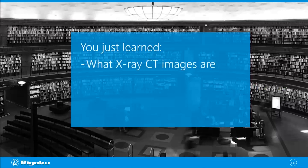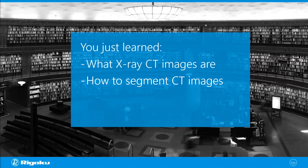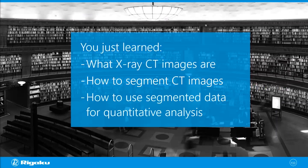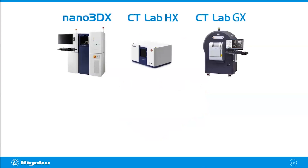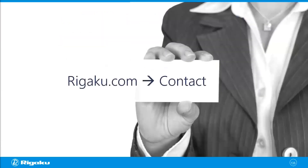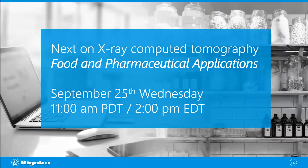I hope that this whole process is less of a mystery to you now and you found something interesting or useful for your image analysis or research. You've learned what X-ray CT images are, how to segment them, and how to use the segmented results for quantitative analysis. All images shown today were collected on Rigaku X-ray CT scanners. This is the end of the second part of the webinar series — the next webinar on X-ray computed tomography will cover food and pharmaceutical applications on September 25th, Wednesday, at 11 a.m. Pacific or 2 p.m. Eastern Daylight Saving Time.